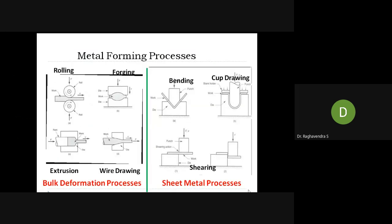As I already gave an introduction about the metal forming process, I will explain the stress-strain curve where exactly this metal forming process occurs — especially at the yielding point, that is in the plastic zone. That is the upper part of the stress-strain curve: the upper yield point, lower yield point, and where plastic deformation takes place. That part comes under the metal forming process.